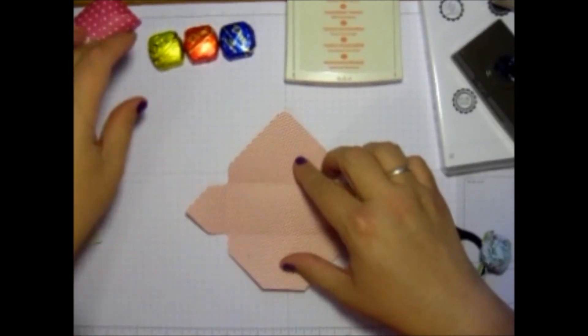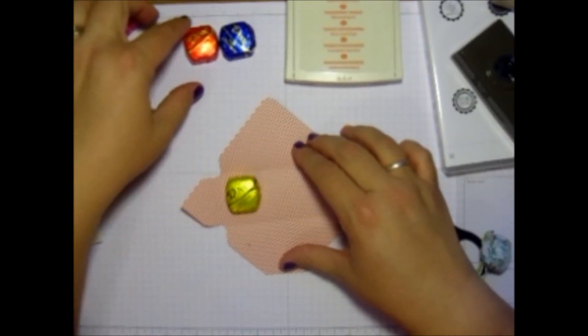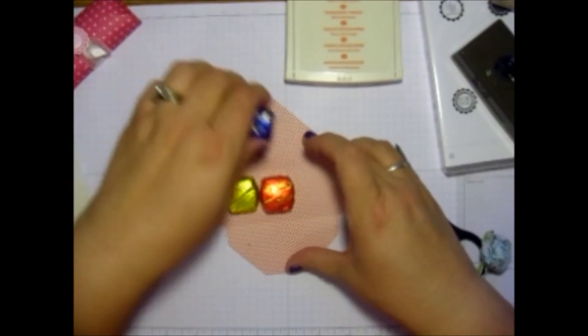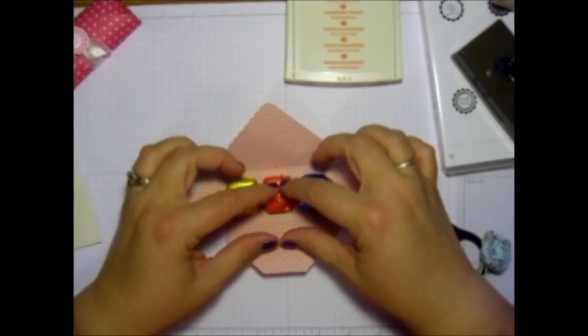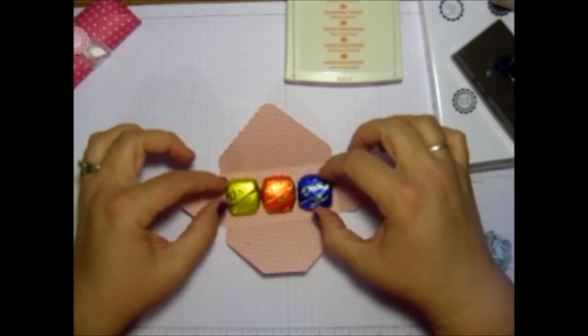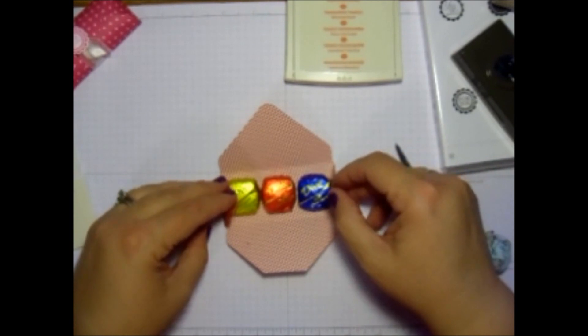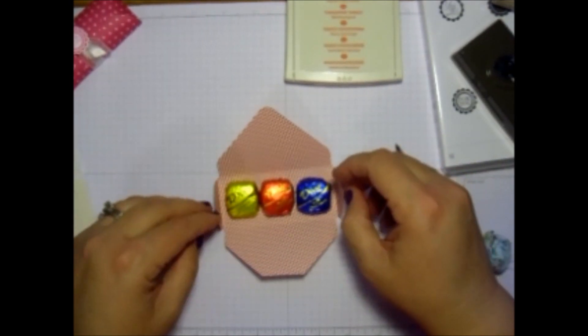So what we did is we took these little dove chocolates. One of each flavor here. And they fit perfectly. Also the little Twix fit in here. Those little fun size Snickers type bars fit in here really well.